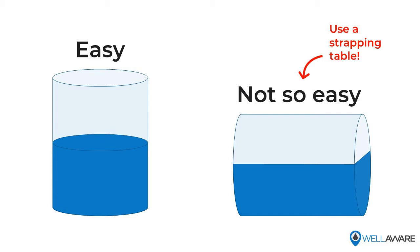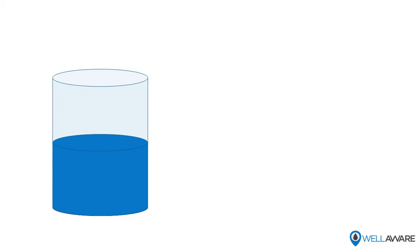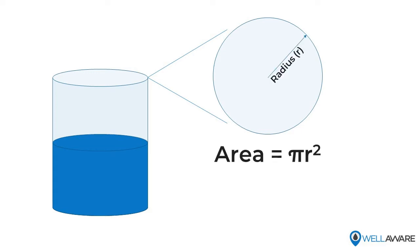So for a simple tank where we can use that equation, the volume is just the level of fluid in the tank multiplied by the cross-sectional area of the tank. So if your tank is a box, that's width times length. If your tank is a cylinder, that's pi times the radius squared.